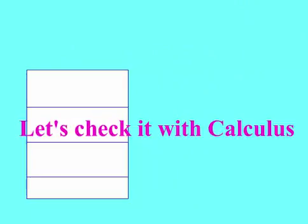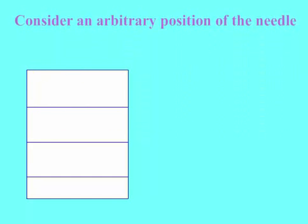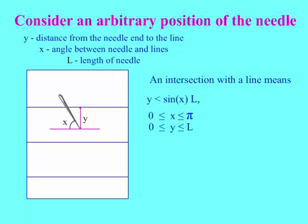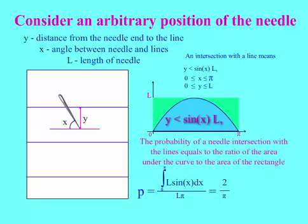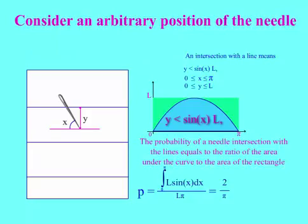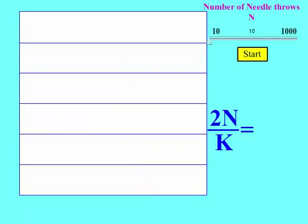Let's check it with calculus. Consider an arbitrary position of the needle. The probability of a needle intersection with the lines equals the ratio of the area under the curve to the area of the rectangle. Let's check the value of pi experimentally.